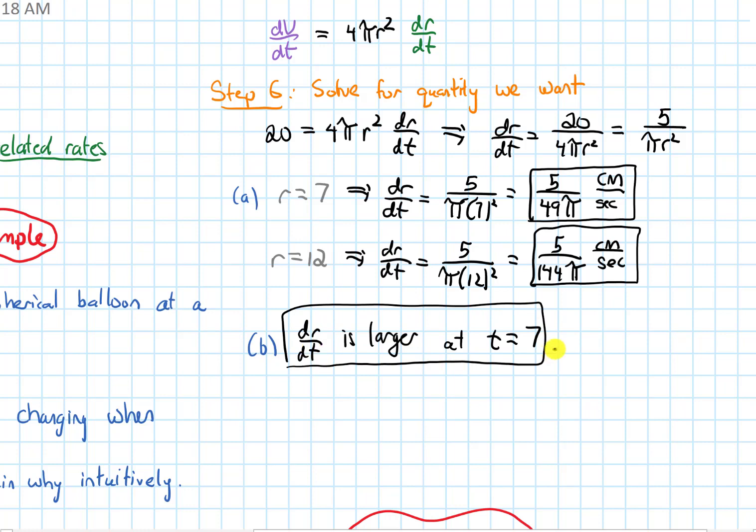It's larger at t equals 7, but then it was asking me to explain why is that the case intuitively. dr/dt is representing the rate at which the radius is changing, and that's bigger at t equals 7. So 7 seconds in, the radius is changing at a quicker rate than it is when r equals 12. The reason for that is, if I think about this intuitively, if we inflate the balloon at a constant rate like this.